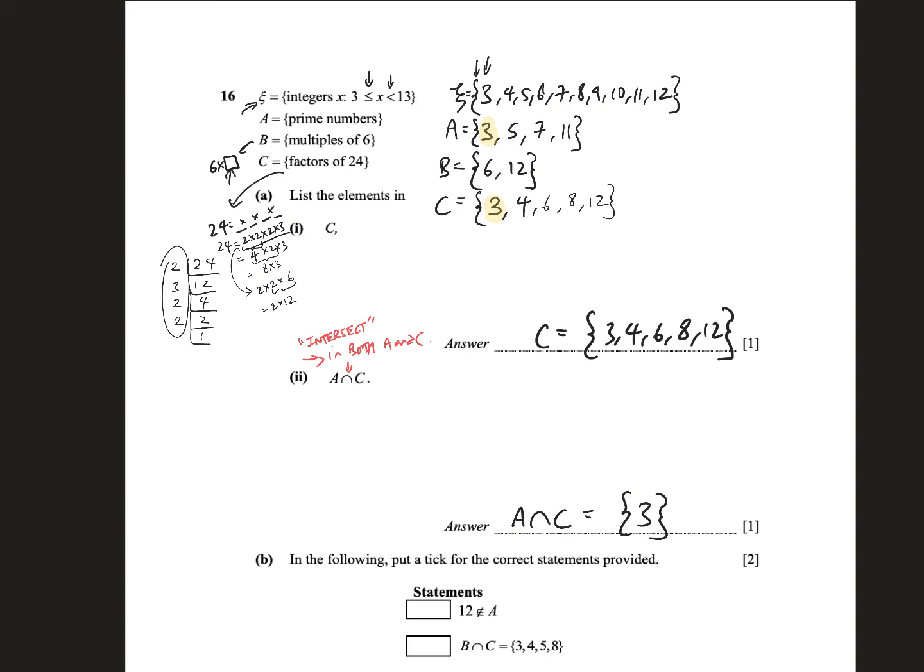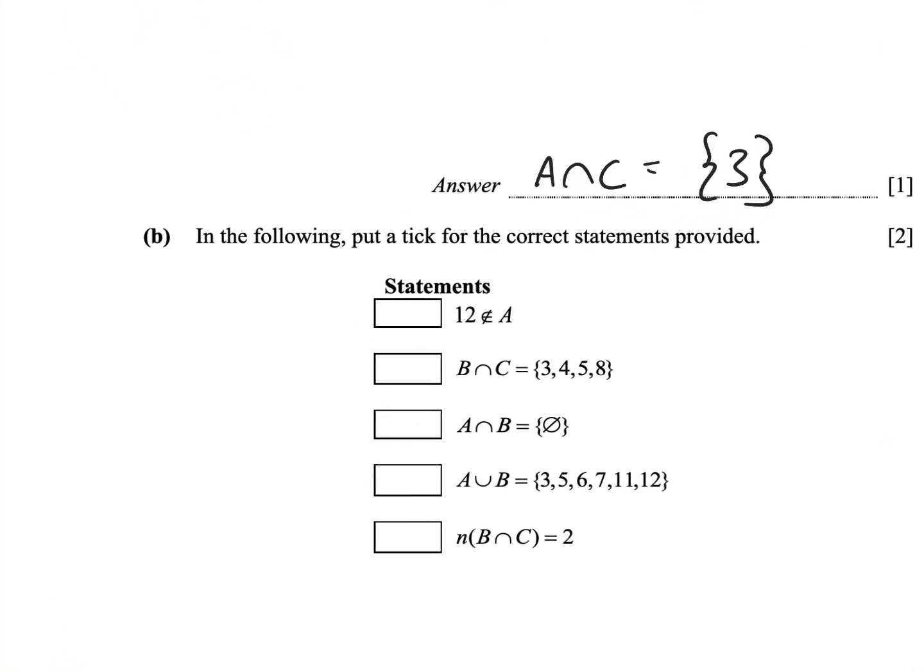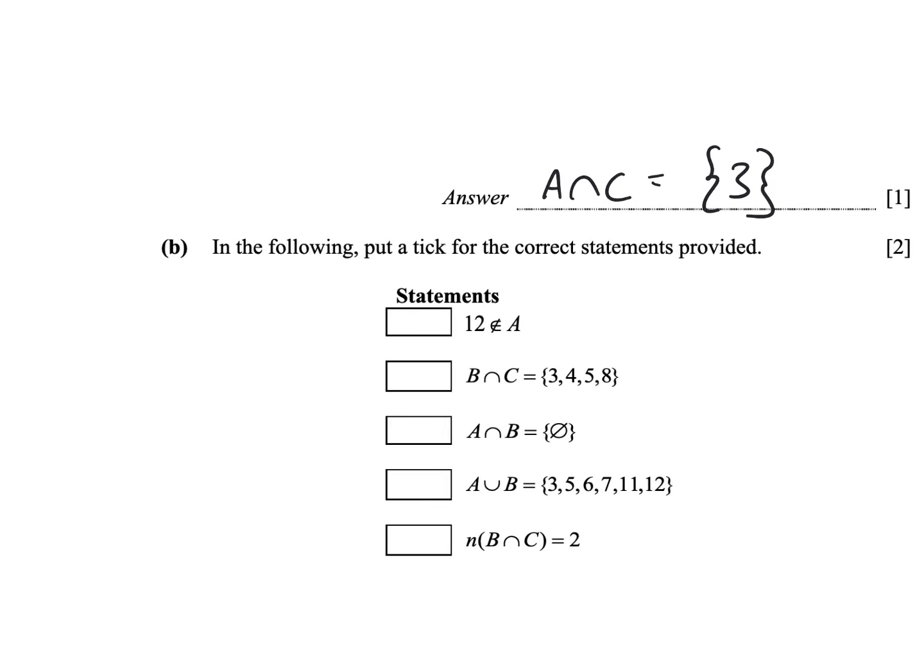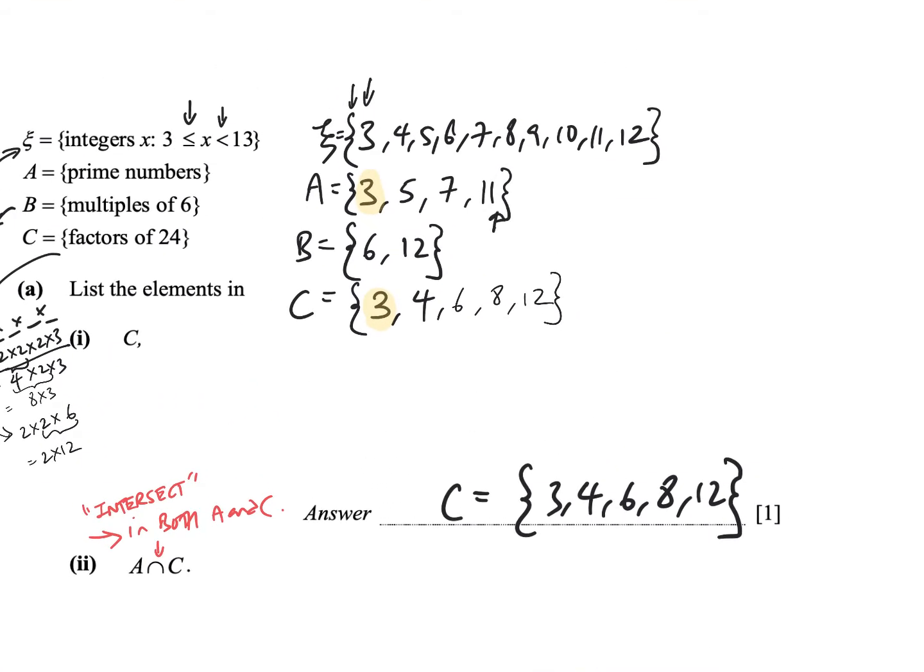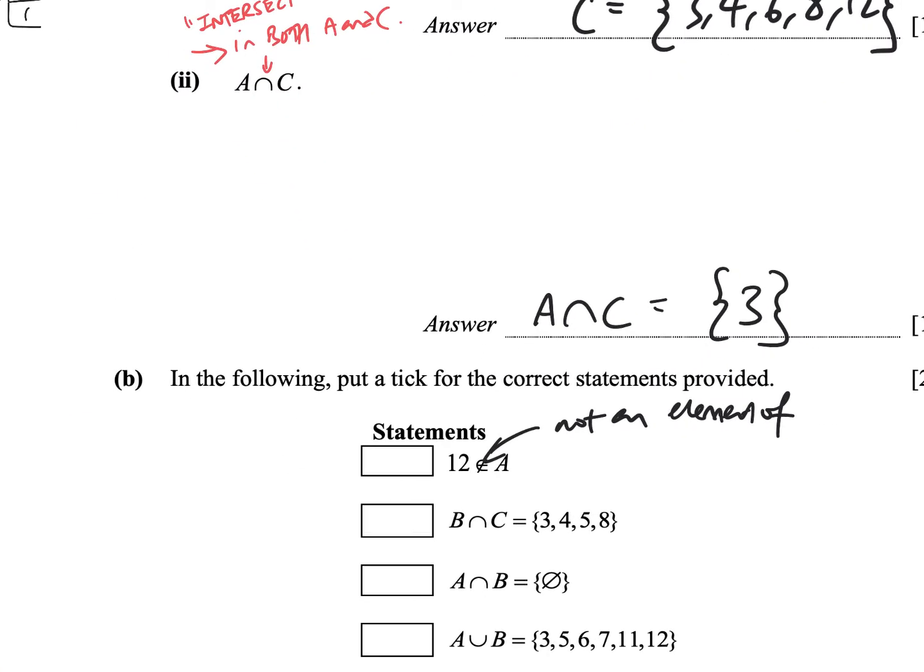Finally, part B. In the following, put a tick for the correct statements provided. So, this is 12 is not an element of. So, this is not an element of. That means 12 does not belong inside the set. Is that true? Yes. 12 is not inside this set. So, that is true. So this is true.